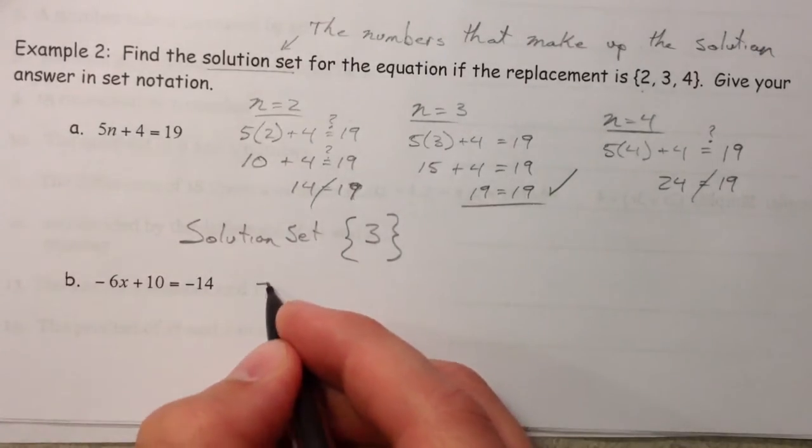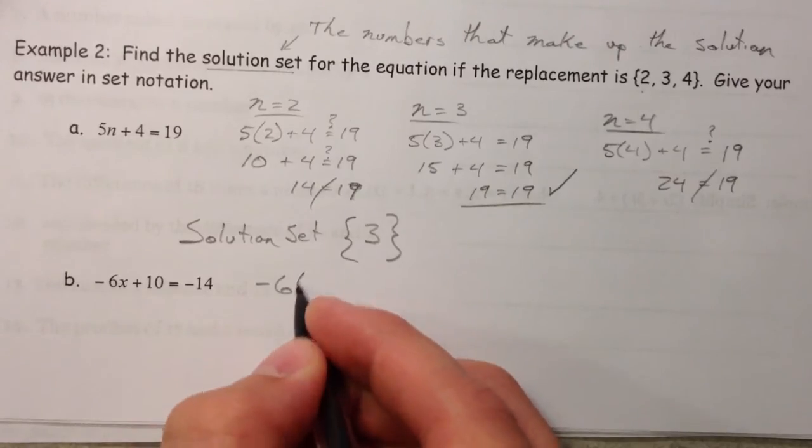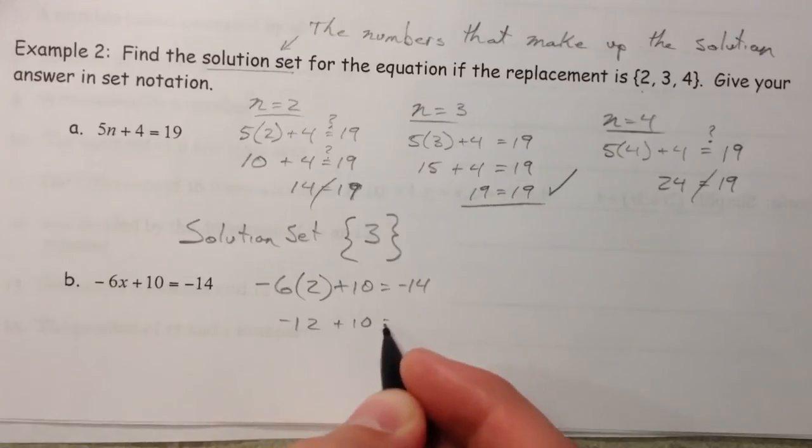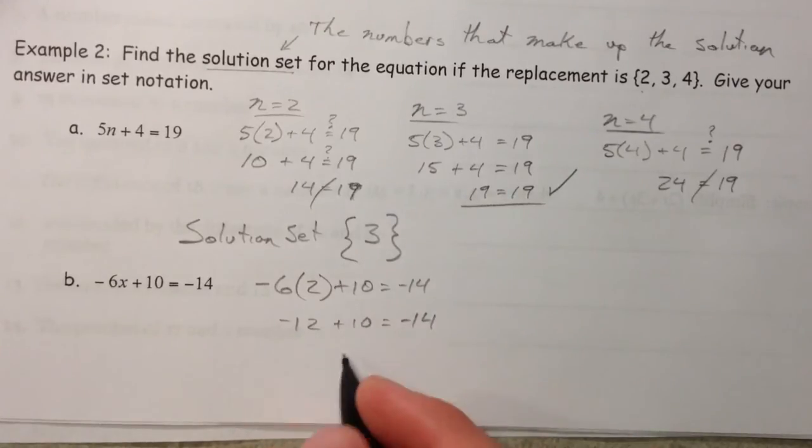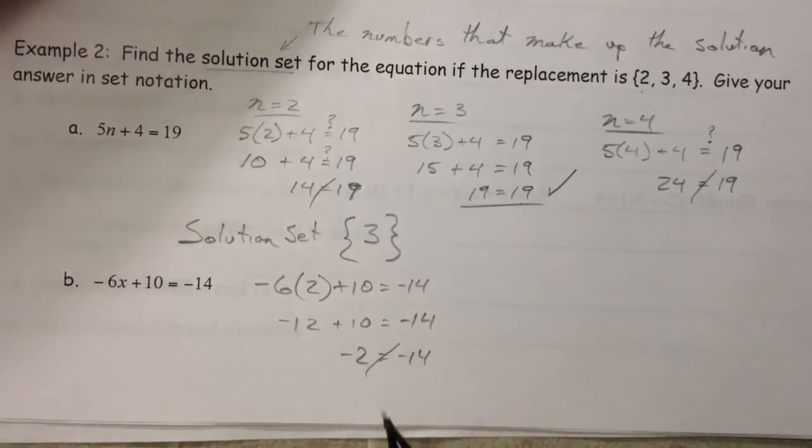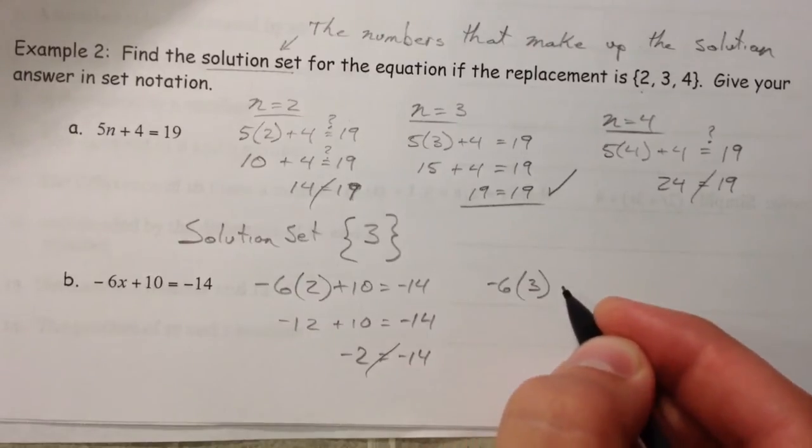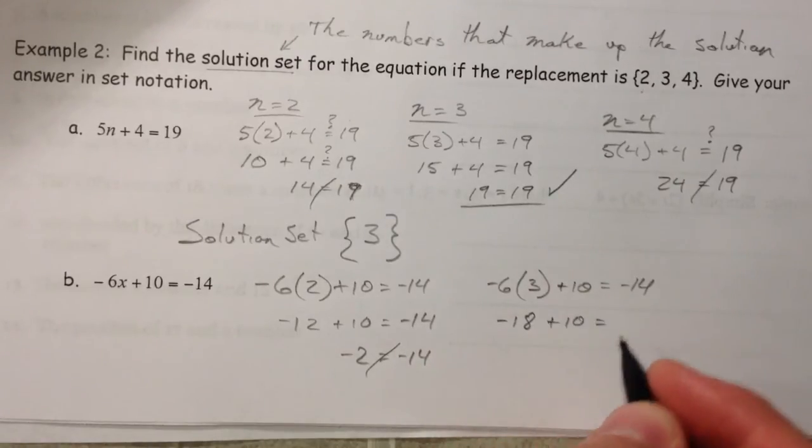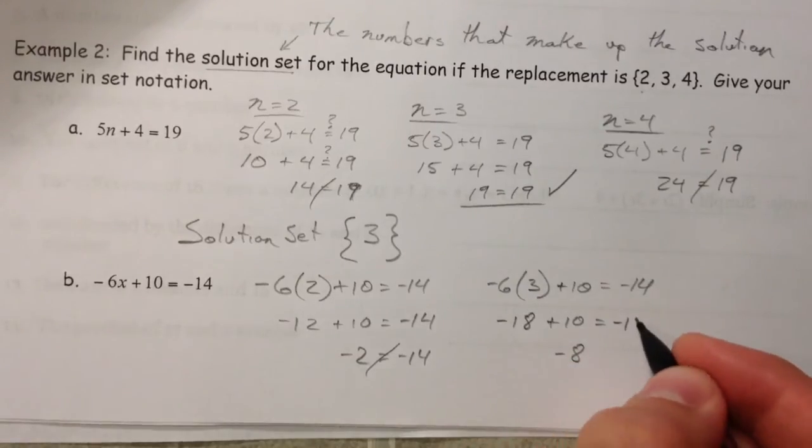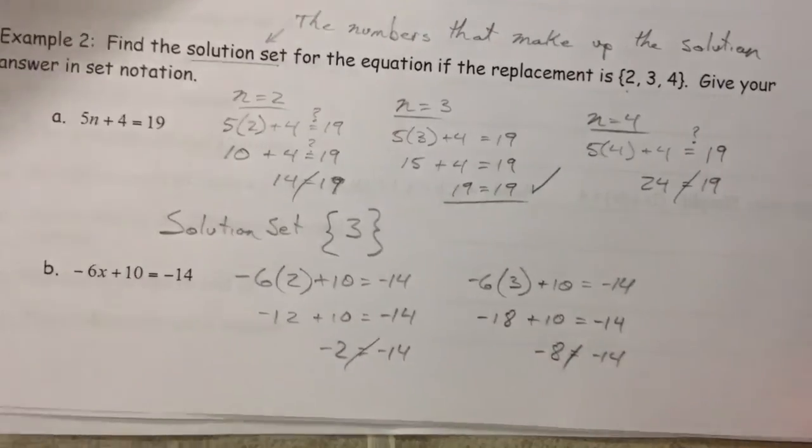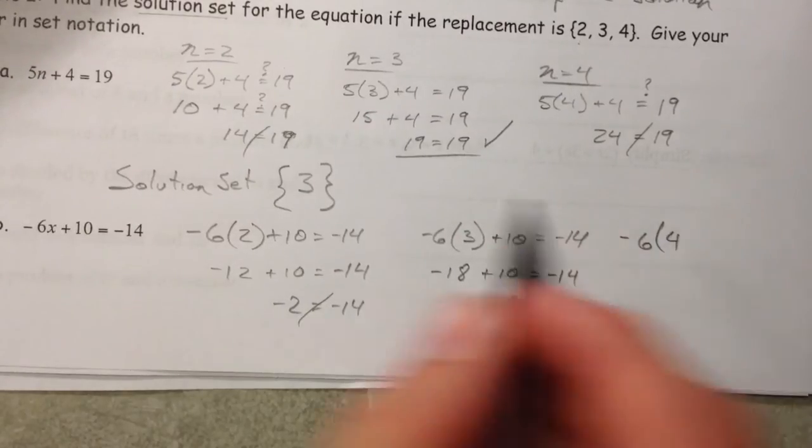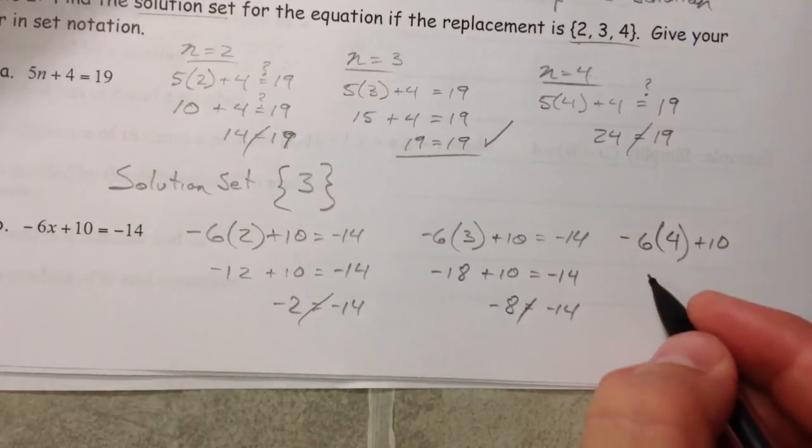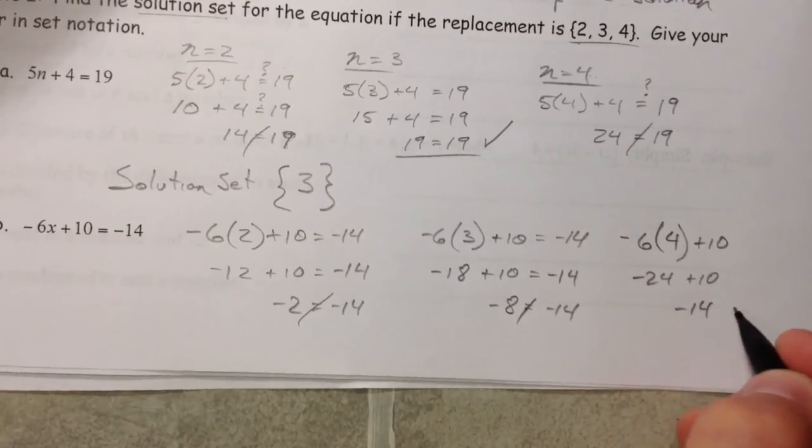Now next one. Negative 6 times, let's just go in the same order, number 2 plus 10 equals negative 14. So you get negative 12 plus 10 equals negative 14. Negative 12 plus 10 is negative 2, and so that is not true. How about negative 6 times 3 plus 10? So that is negative 18 plus 10, negative 8, because combining those, one positive, one negative. And so this is also not true. So then finally we're on to choosing the 4. And again we just did 2, 3, and 4. I'm just going in that order again.